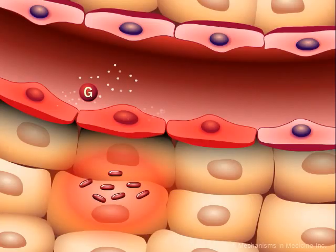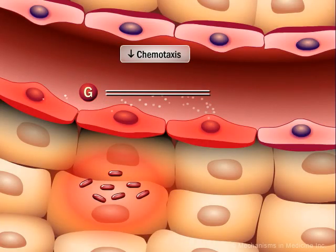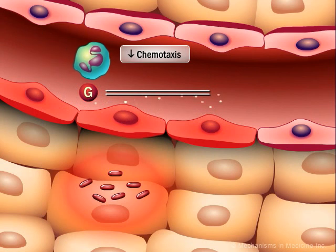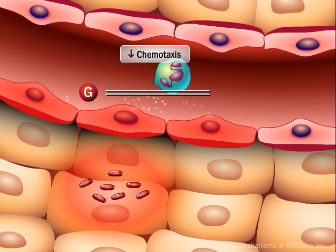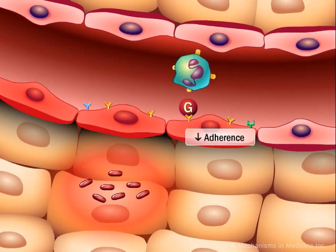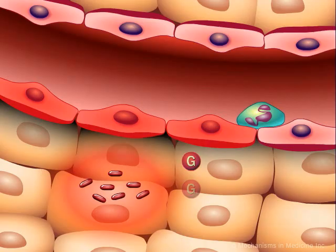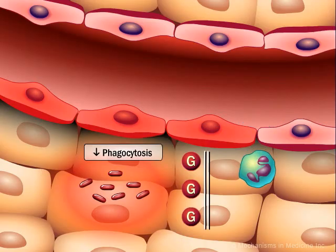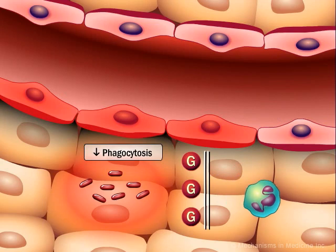In states of hyperglycemia, chemotaxis is reduced. Adherence is also adversely affected. Phagocytosis is also impaired by hyperglycemia.